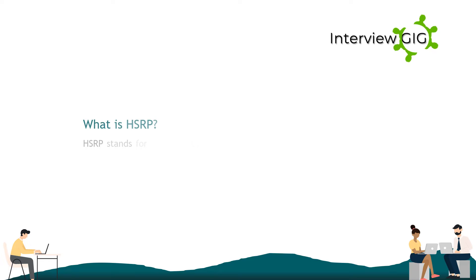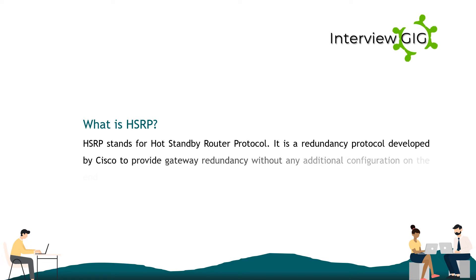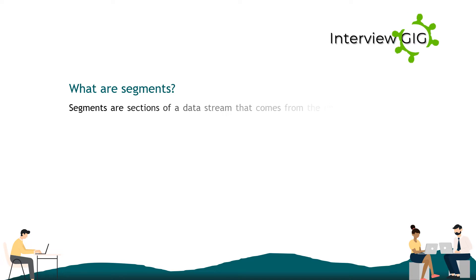What is HSRP? HSRP stands for Hot Standby Router Protocol. It is a redundancy protocol developed by Cisco to provide gateway redundancy without any additional configuration on the end devices in the subnet.